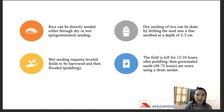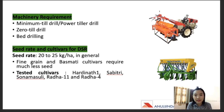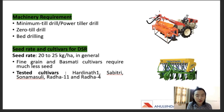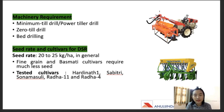Now let us look at the machinery requirements used during the direct seeding method. The first is a minimum-till drill or a power tiller — through this the seeds are dropped into the basket and sown directly. We also have a zero-till drill and a bed driller. These are the machines used for the direct seeding method.